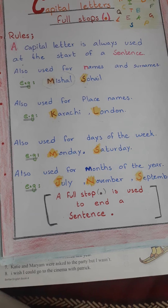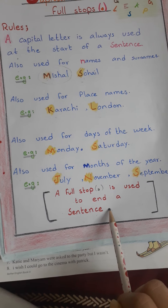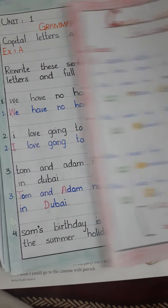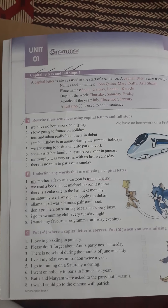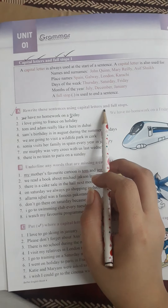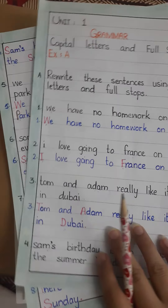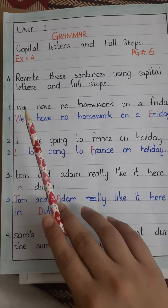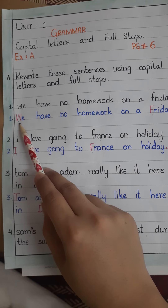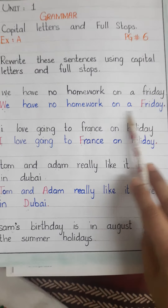A full stop is used to end a sentence. Now for Exercise A — rewrite these sentences using capital letters and full stops. Number one: 'We have no homework on a Friday' — the W at the start of the sentence is capital, and F of Friday is capital because it is a day of the week. Number two: 'I love going to France on holiday.' Remember, the single letter I is the king of the alphabet and is always written in capital.